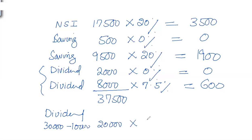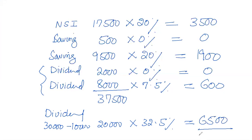We have covered £10,000 out of £30,000 dividend so far. The remaining £20,000 falls in the higher rate band and is taxed at 32.5%, giving £6,500. Total tax liability for this example is calculated by summing all portions, coming to approximately £12,000.